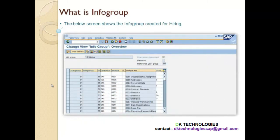When you define an Info Group — for example, for hiring — this screenshot shows you an Info Group which has been created for hiring purpose. This hiring Info Group has a sequence of Info Types, and you must notice that it is also dependent on the User Group. If you see the User Group here — User Group 01 — all the users who belong to User Group 01 are able to access or execute this Info Group.